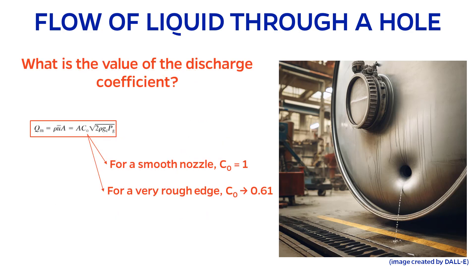Let's revisit the frictional loss. The value of C0 can be determined experimentally, and the conclusion is that a smooth, well-rounded nozzle has a discharge coefficient of 1, meaning no frictional loss.